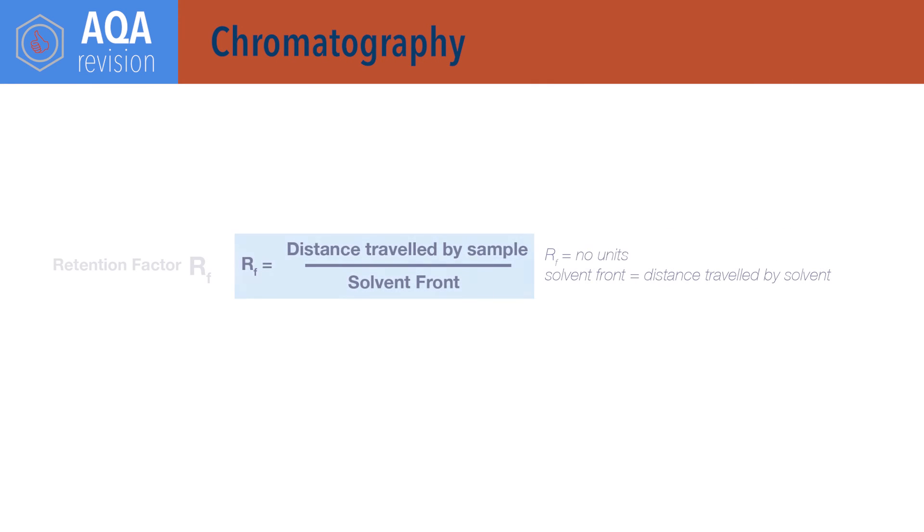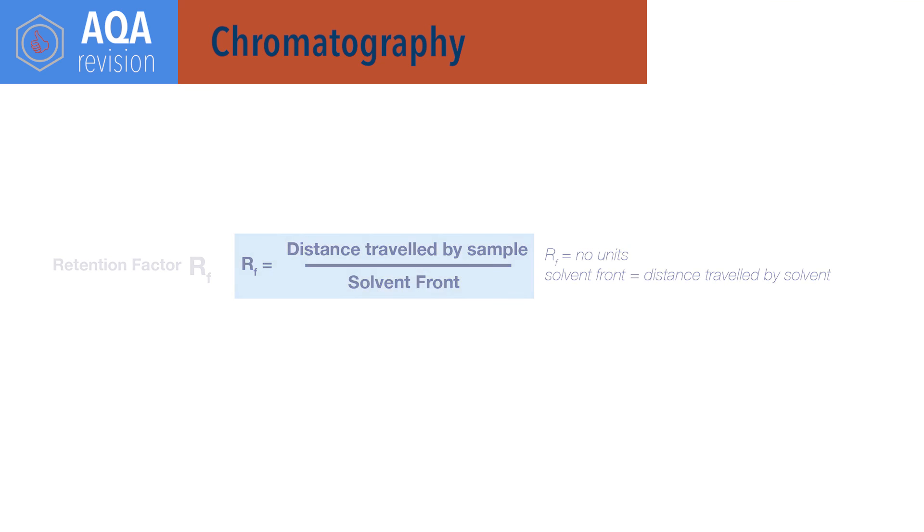For chromatography, RF equals distance travelled by sample divided by solvent front, where the solvent front is the distance travelled by the solvent. RF or retention factor values have no units.